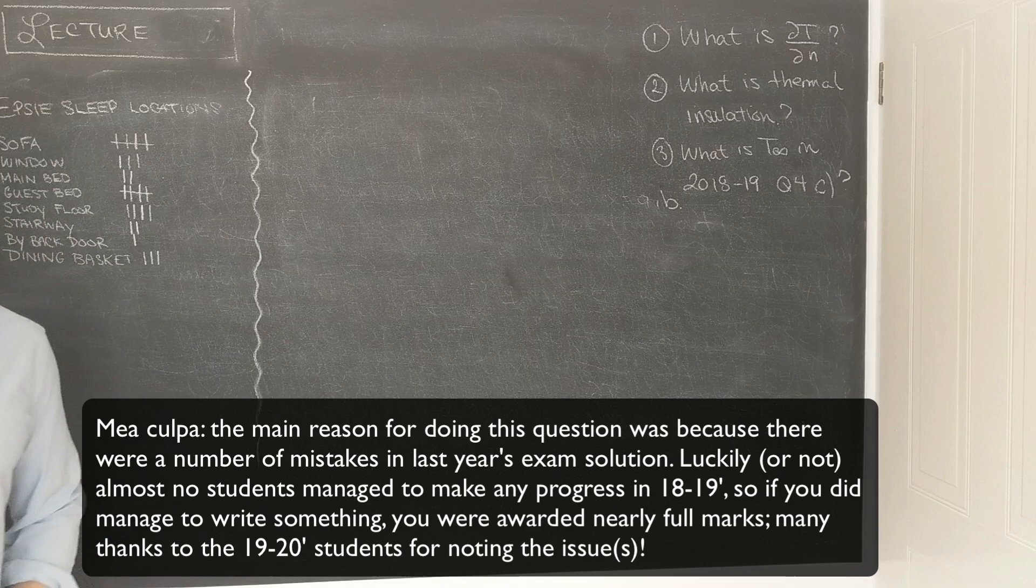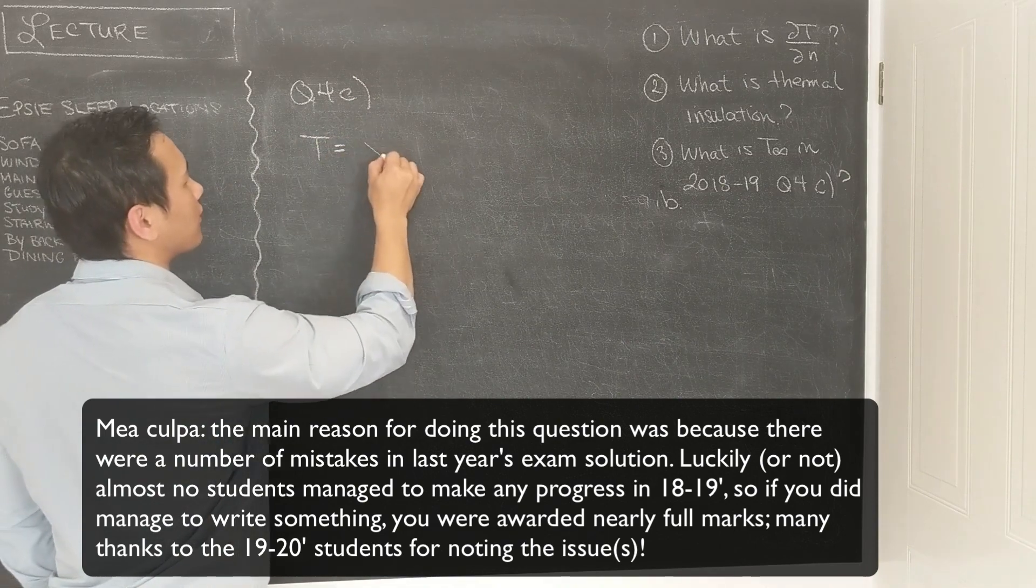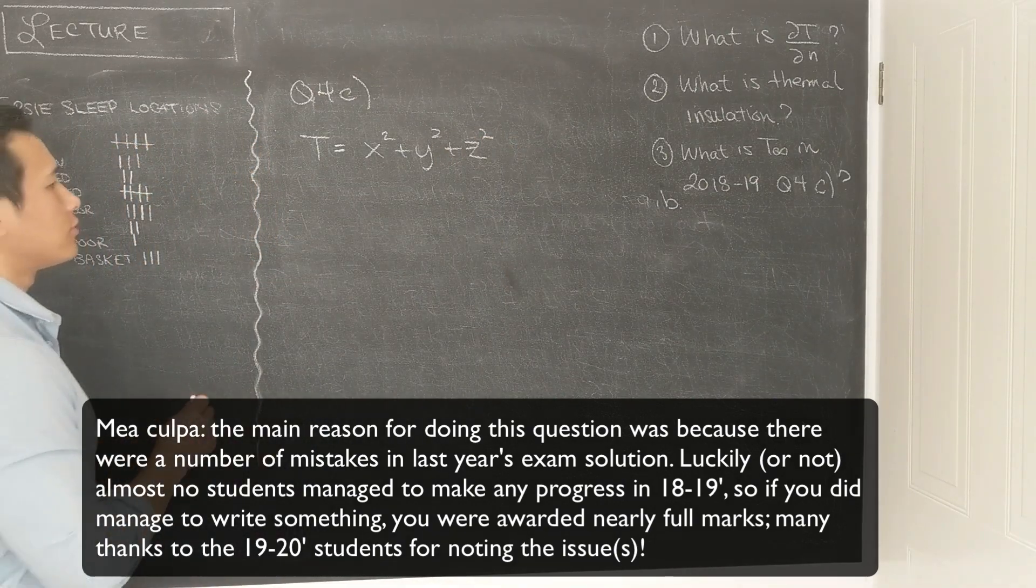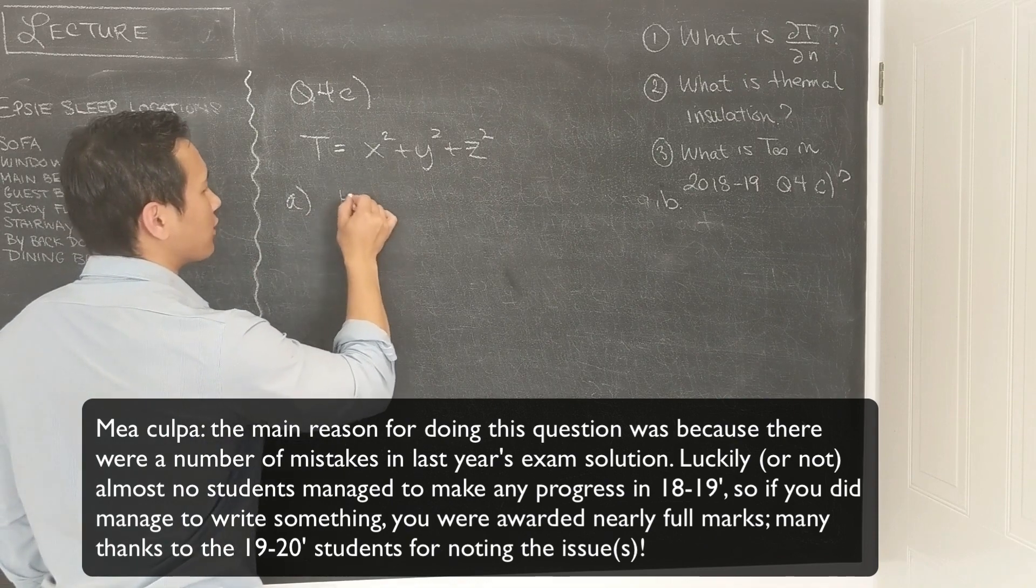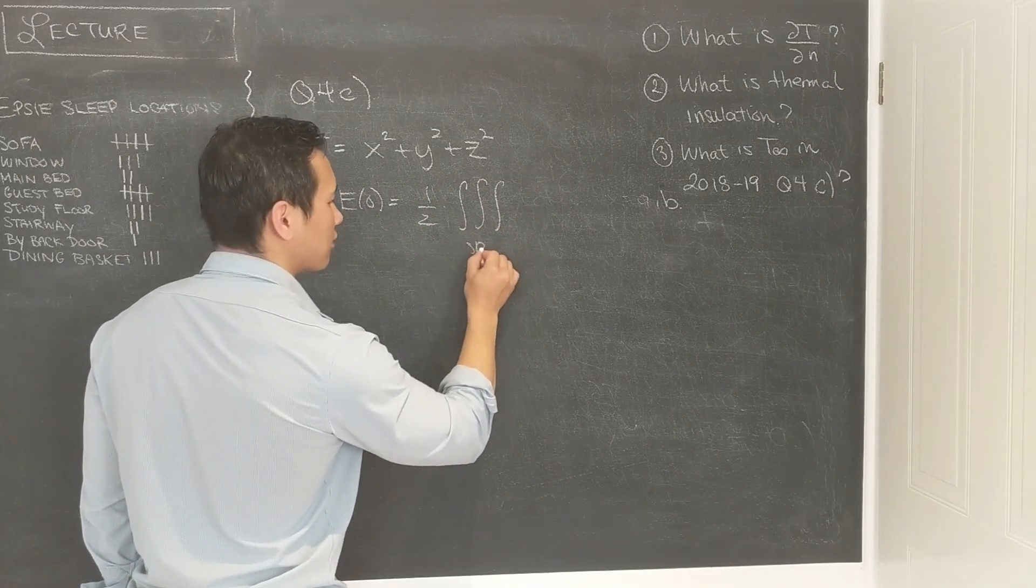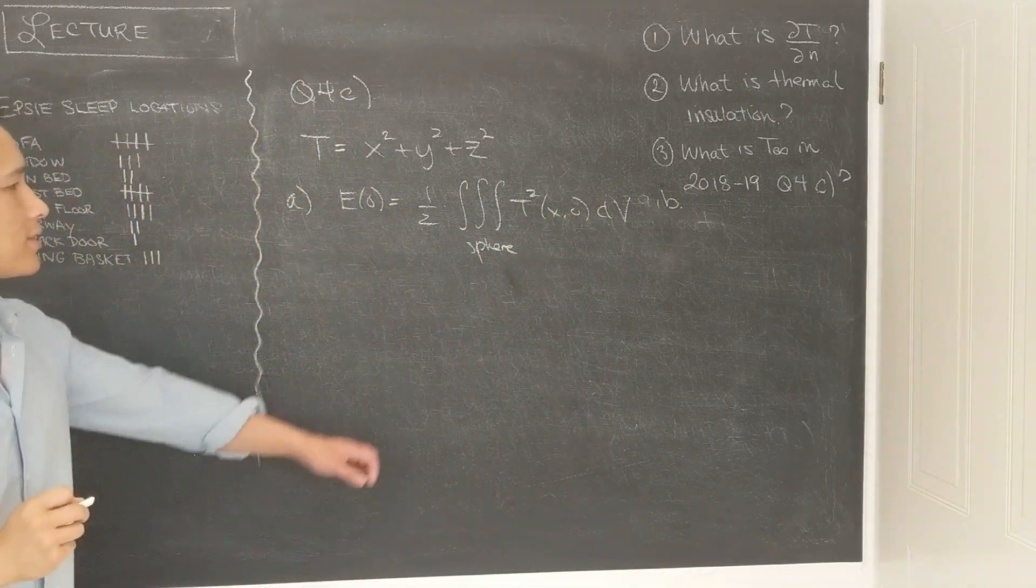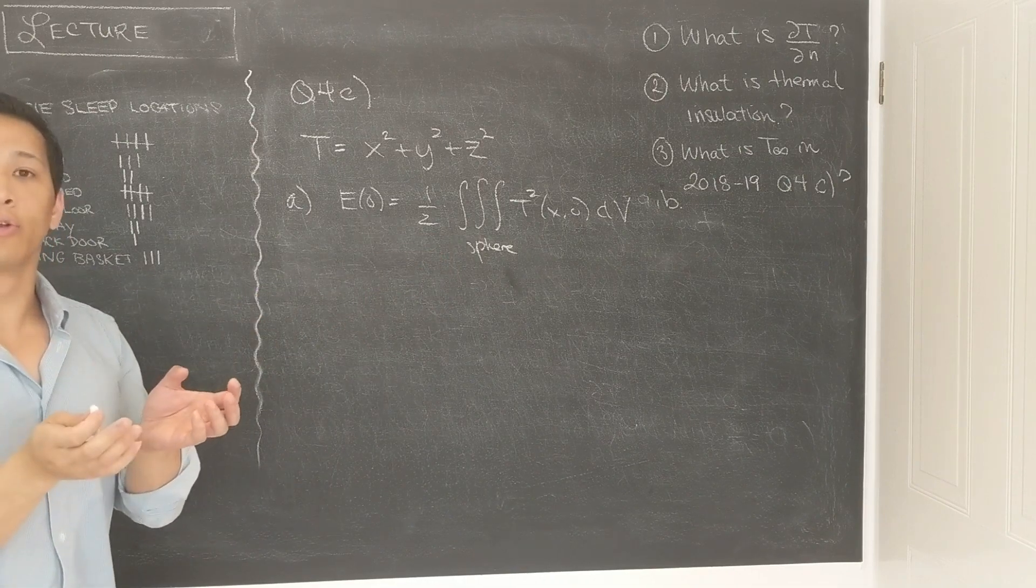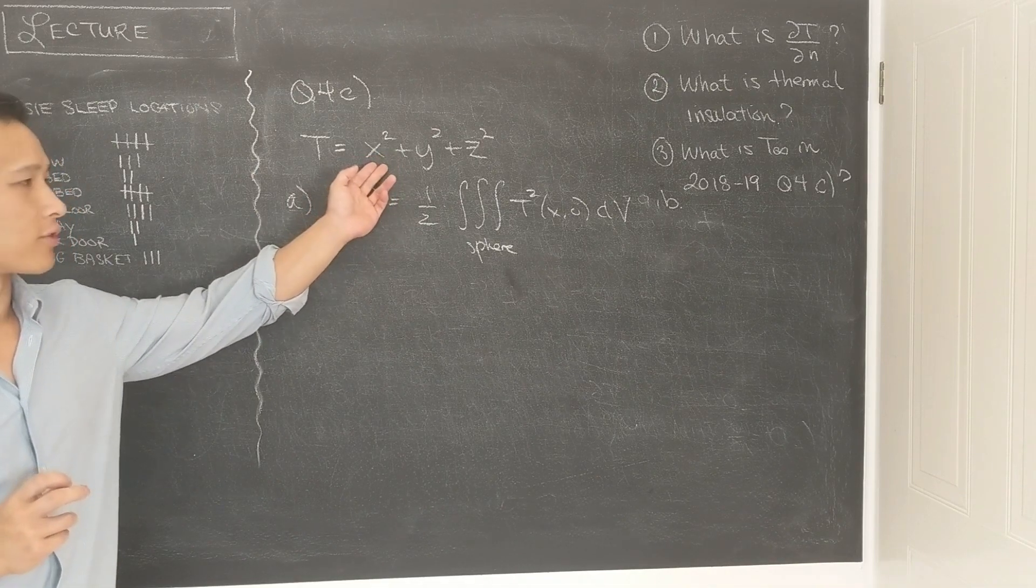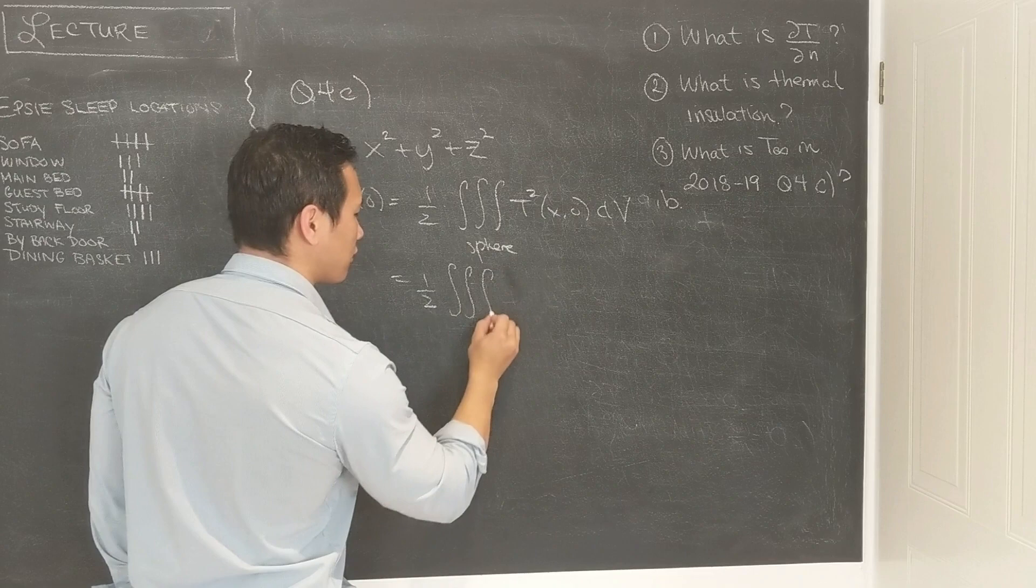So question 4c essentially gave you a temperature field. I think it was x squared plus y squared plus z squared, and it firstly asks you to calculate the initial energy where the volume was a sphere. So this is a sphere, and it asks you to calculate the integral of one-half t squared of x0 dV. So this is the initial energy contained within a unit sphere where the temperature is given by this function here. So you convert this to spherical coordinates, and you put it into here, and then integrate the dV.